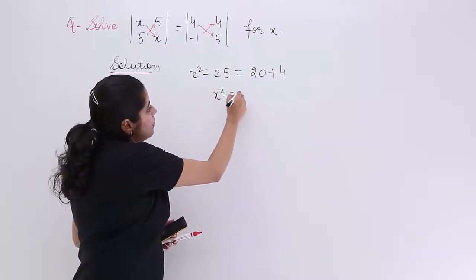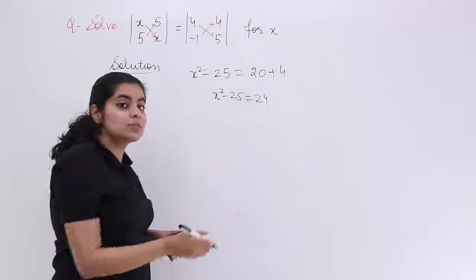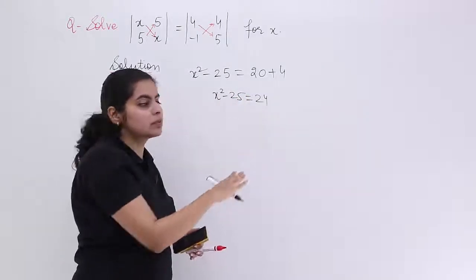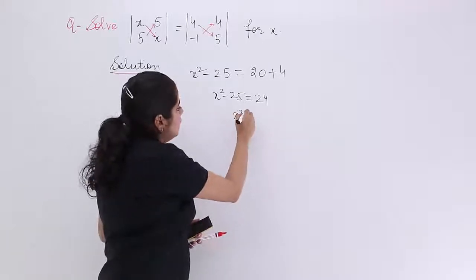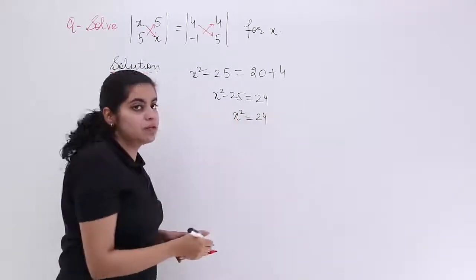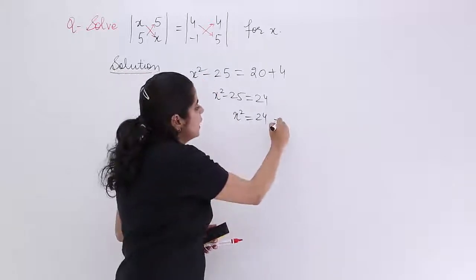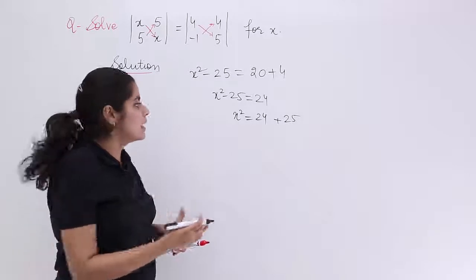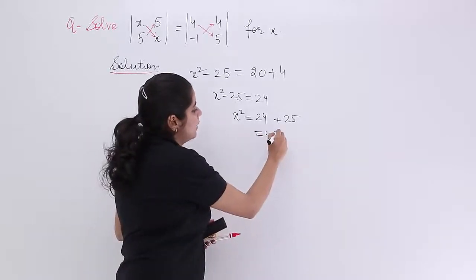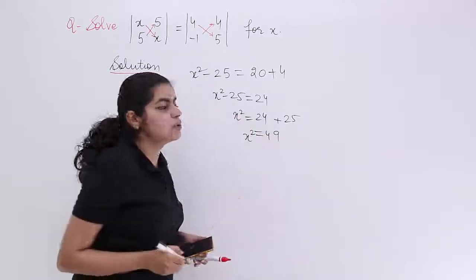So it becomes x² - 25 = 24. Now this minus 25 is a number. 24 is also a number. So let's keep these together. Minus 25 goes to the other side, becomes plus 25. What is 24 + 25? It is exactly equal to 49. So x² = 49.